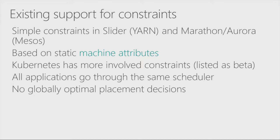There is some existing support for constraints in schedulers today — for example, simple constraints in Slider for Yarn or in Marathon and Aurora for Mesos. But all these are rudimentary and based on static machine attributes. Kubernetes recently added more involved constraints, but this is still listed as a beta feature. Another problem is that all applications go through the same scheduler, with no globally optimal placement decisions.